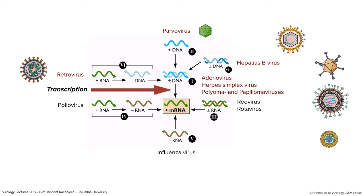The viruses we're going to talk about today are in red: viruses with double-stranded DNA genomes that have to make mRNA — adenoviruses, herpes simplex virus, polyomaviruses. We'll touch on hepatitis B virus briefly, parvoviruses briefly, and a little bit about retroviruses. Even though retroviruses are RNA viruses, they make a DNA copy of their genome, and that DNA undergoes transcription to make messenger RNAs.